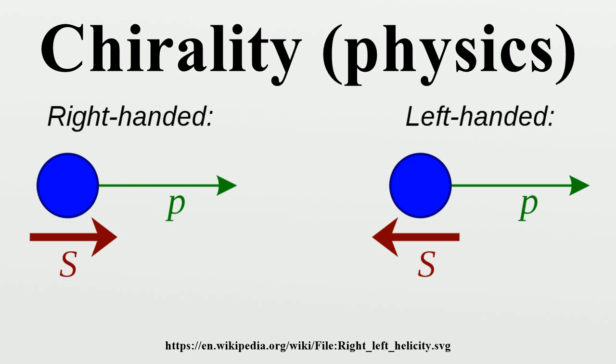Left-right models predict domain walls. This left-right symmetry idea first appeared in the Pati-Salam model.